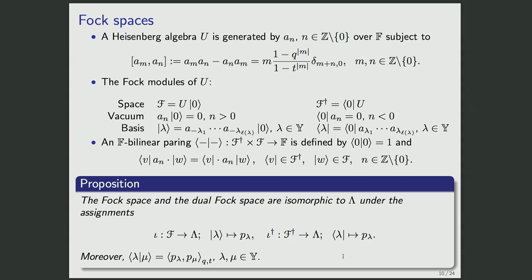The dual space F† also admits a basis labeled by partitions, where <lambda| is naturally defined by a corresponding formula. I think of F and F† as dual to each other, with an F-bilinear pairing such that the norm of the vacuum vector is unity, and the right representation of the Heisenberg algebra is compatible with the left action for all vectors and generators.